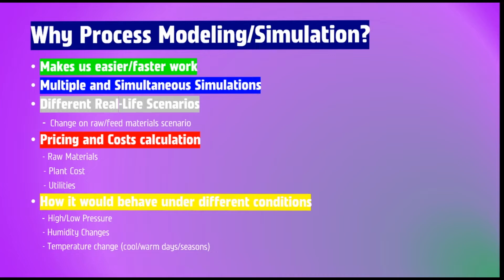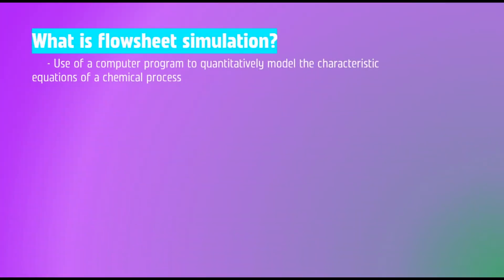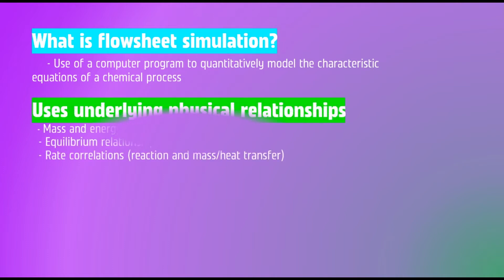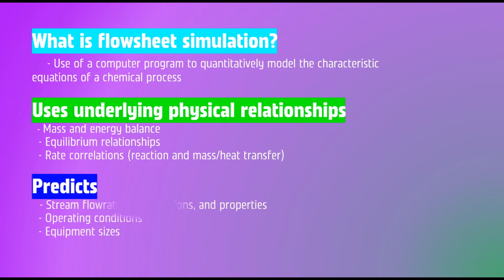Number five, it shows how a process would behave under different conditions — for example, high or low pressure, humidity changes, and temperature changes. Continuing: what is flowsheet simulation? It is the use of a computer program to quantitatively model the characteristic equations of chemical processes, using underlying physical relationships such as mass and energy balance, equilibrium relationships.